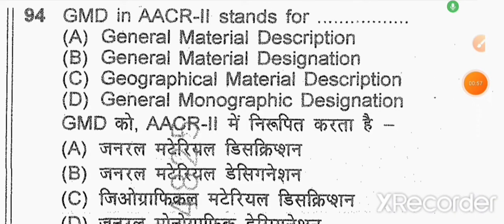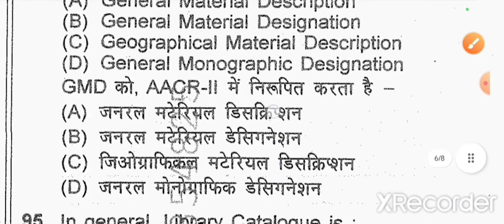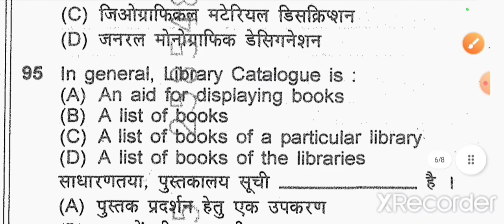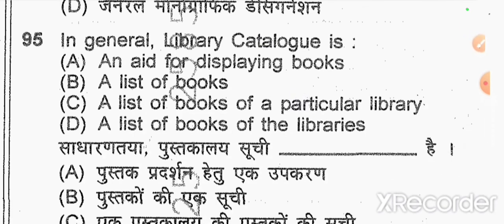Question number 94: GMD in AACR2 stands for — option B — General Material Designation. Question number 95: in general, a library catalogue is — option C — a list of books of a particular library.